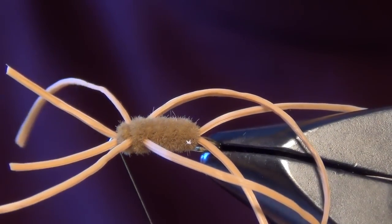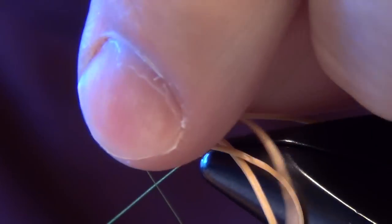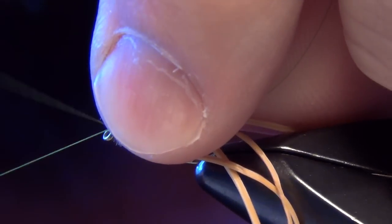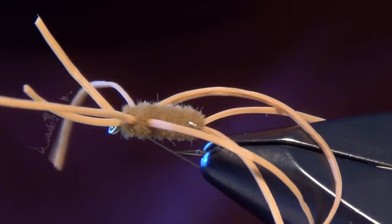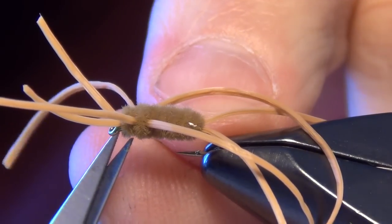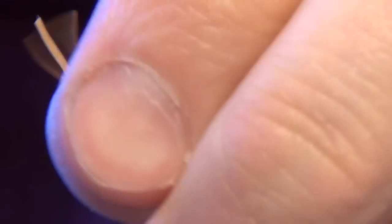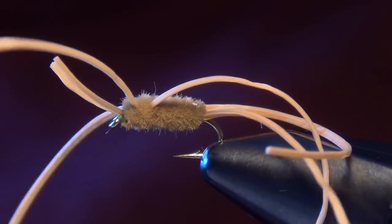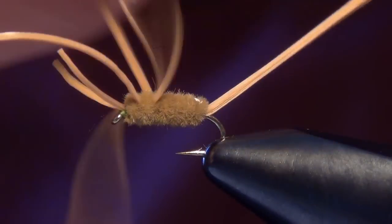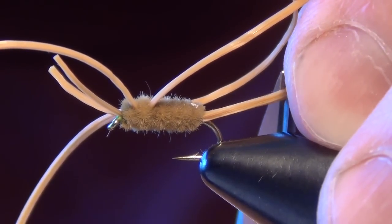Now for the tricky part, the whip finish. I'm just going to pull all the material out of the way and whip finish right underneath that eye. Now we can trim our antennae. I like them to be about three quarters of the length of the shank of the hook, just less than the length of the shank of the hook.